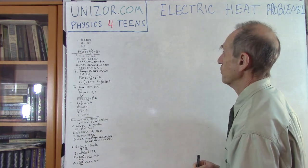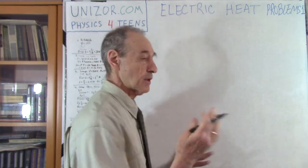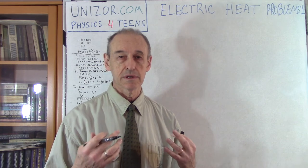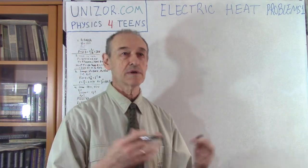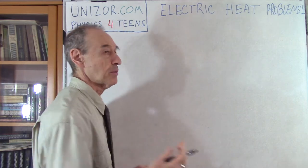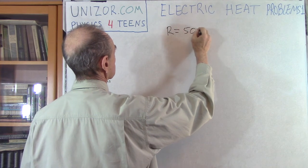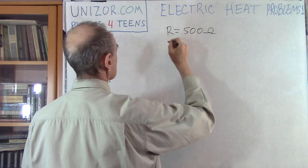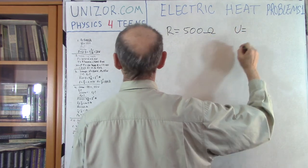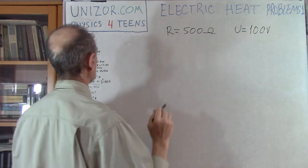So let's go to the problems. The first one is very easy. All these problems are related to a simple device which everybody knows about - incandescent lamps. Let's consider you have a lamp which has a resistance of 500 ohm and it's connected to a source of electricity with voltage 100 volts.